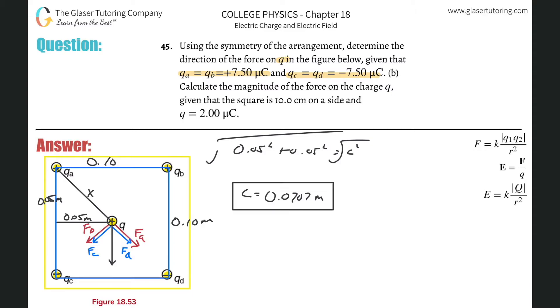Now square root both sides and bada bing, bada boom, there you go. So square root of 0.05 squared plus 0.05 squared. So we know that that's going to be 0.0707 meters. So now this is the distance. That's the R. Now, what do I need to do? So why don't we find the force? Why don't we find that force now?